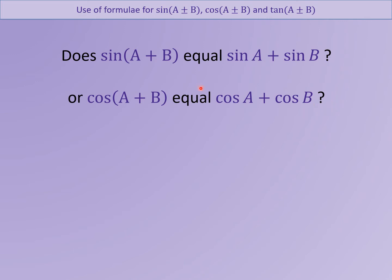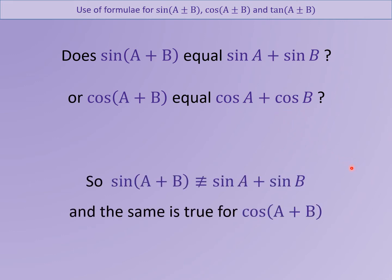What you probably found is that if you tried some simple numbers — for example, cos(20+30), so cos(50) — that does not give you the same answer as cos20 plus cos30. Those two things are not identical; it's not an identity at all. But what we're going to investigate is: if you have sine of two angles added together, how do you separate it out? What is it identical to?